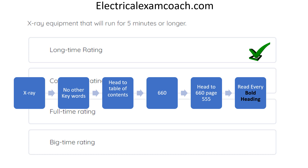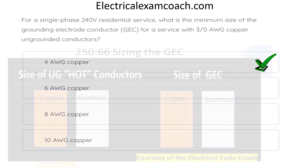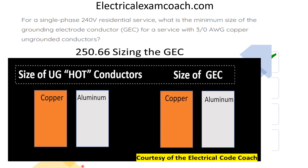There are many angles you can tackle a question, and I want to teach you a way of thinking and structure that works both on exams and in the field. For a single-phase 240-volt residential service, what is the minimum size grounding electrode conductor for a service with 3-aught copper ungrounded conductors? The correct answer is 4 AWG. First, ask whether the question mentions the type of electrode. It does not, so we use Table 250.66 at face value. Select from the copper side for copper ungrounded hots, and cross over to the copper side for the copper grounding electrode conductor.